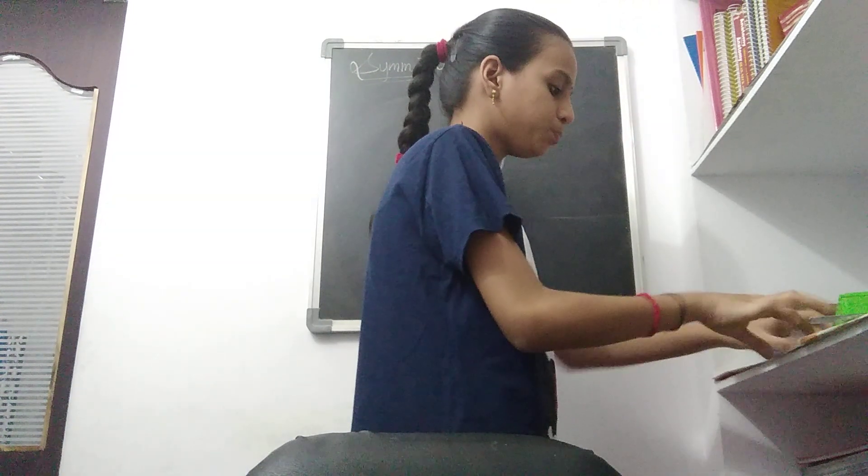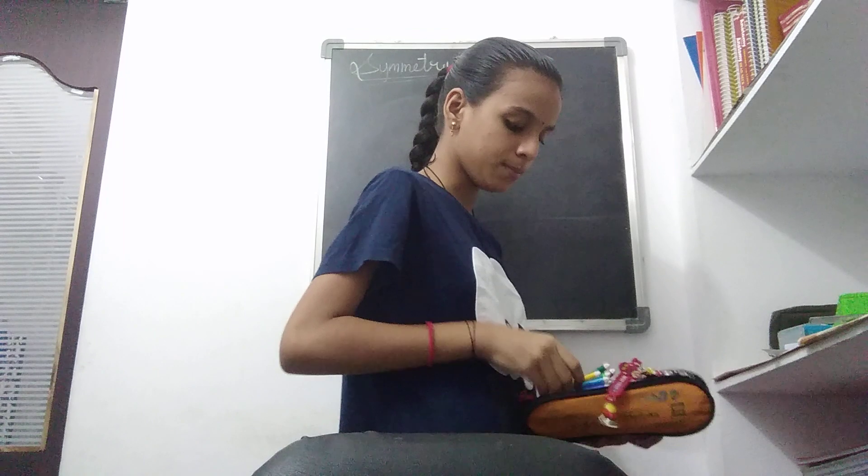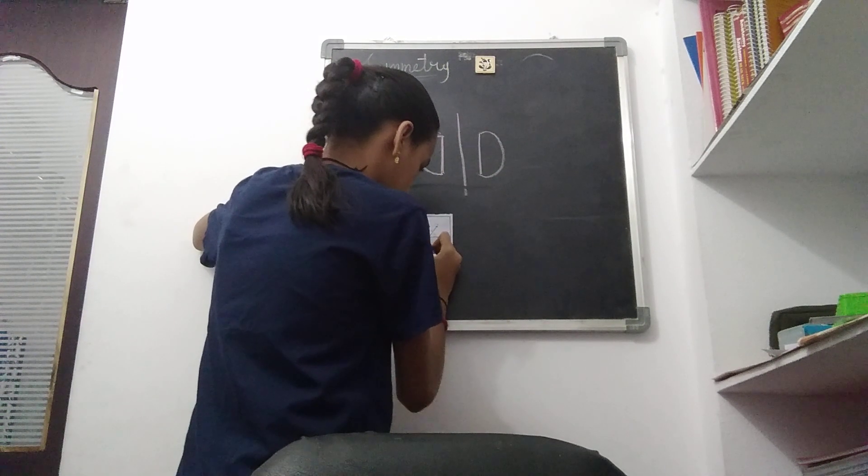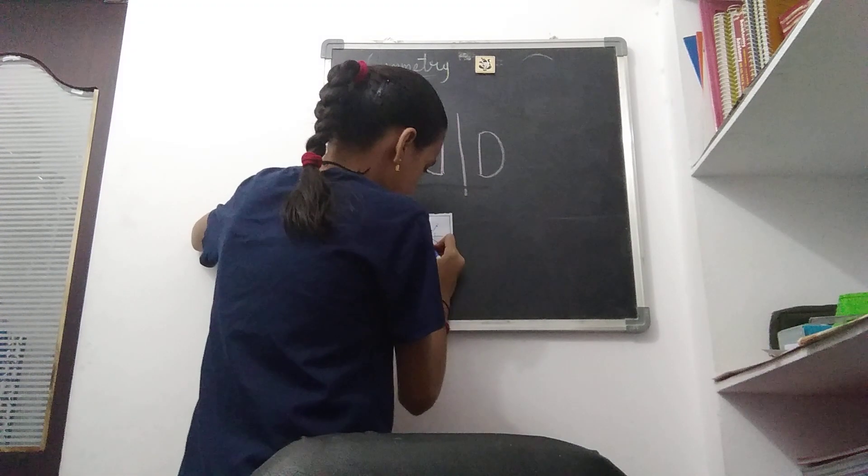Reflection symmetry — an example for reflection symmetry is this one. Now I am going to draw the reflection for this figure. These three types of symmetry are easy to understand, so you can easily solve these sums. The reflection of symmetry should be in the same size; color does not matter here, but I am drawing the same color.